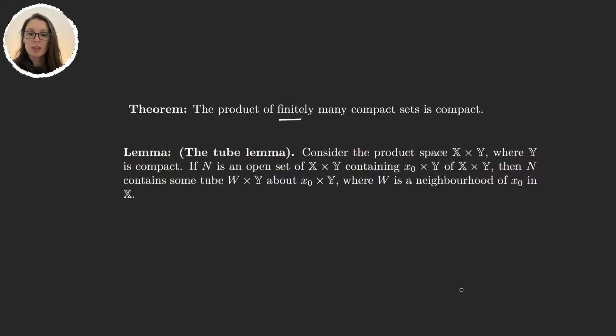This lemma is very important and can also be useful to solve some of the exercises. What it says is we are in the product space of two spaces where the second one is compact. And then if we consider x₀ times Y for some x₀ fixed in X and N a neighborhood of the set, then N will contain some tube around x₀ times Y, where W is a neighborhood of x₀.